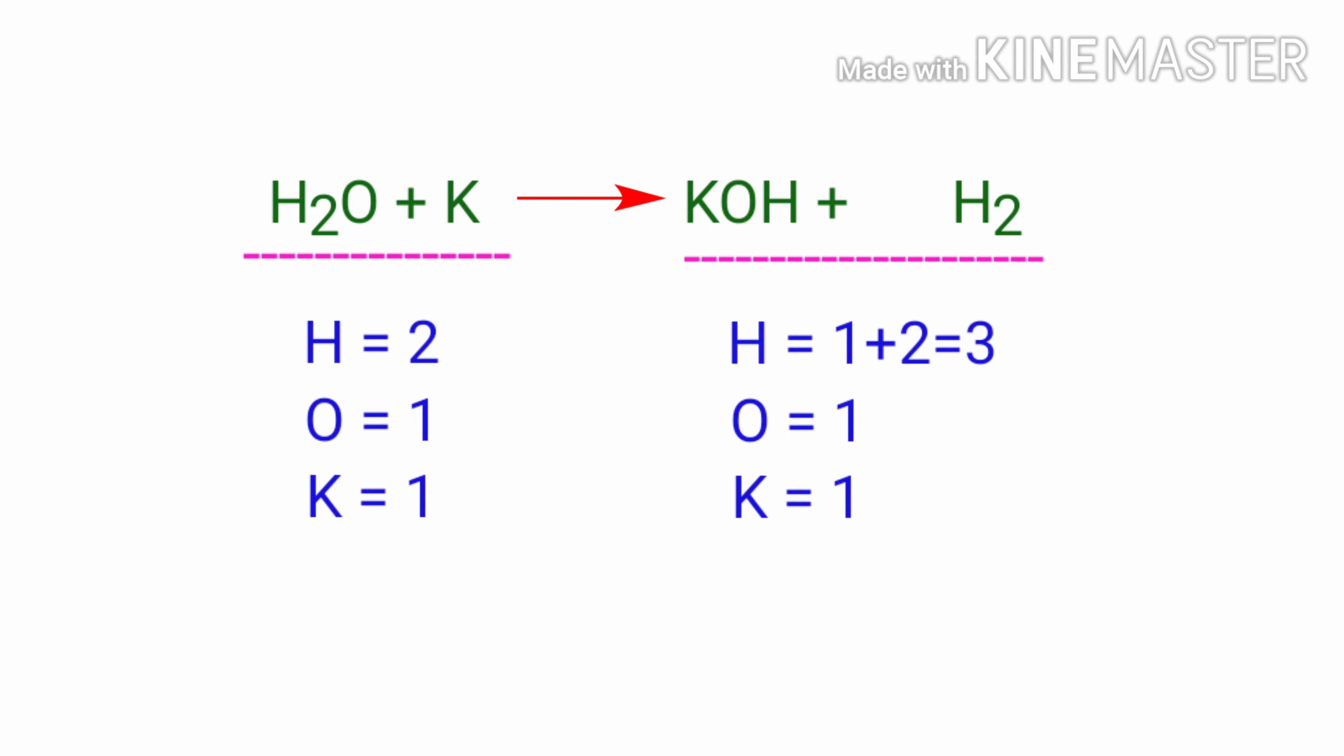If you look at this equation we can see that the equation is not balanced. On the reactants side there are two hydrogen atoms, one oxygen atom and one potassium atom present. On the products side there are three hydrogen atoms, one oxygen atom and one potassium atom present. The number of atoms are not balanced on both sides.